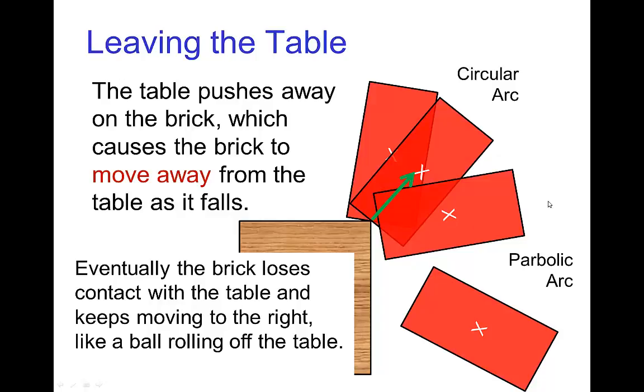But then at some point it's moving fast enough, it's going to lose contact with the table, and at that point it has a velocity away from the table. So it has already slowed out and gained speed moving away from the table and it will continue moving away from the table. Once it's in the air, it follows a parabolic arc as its path of action.